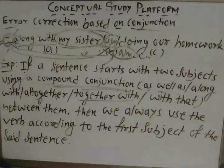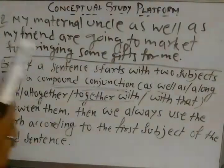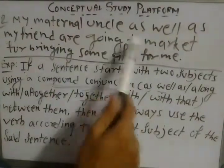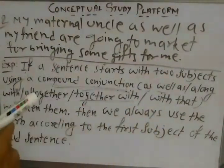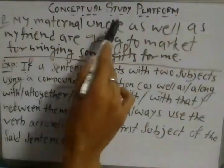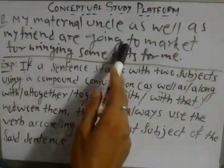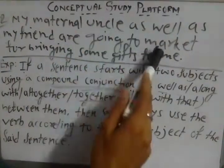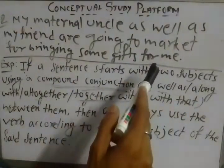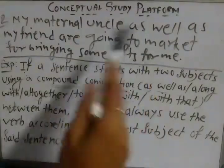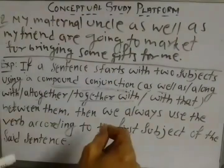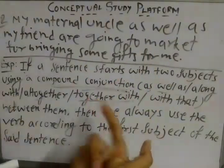Next question, friends. 'My maternal uncle, as well as my friend, are going to market for bringing some gifts for me.' Look at the sentence carefully. Take time and try to solve it — is this sentence correct or incorrect? Pause your video and try to answer correctly.